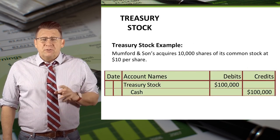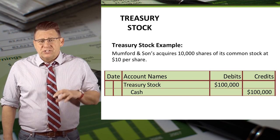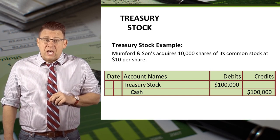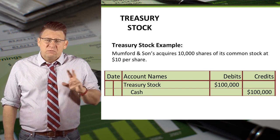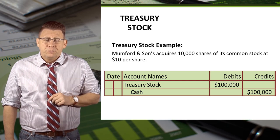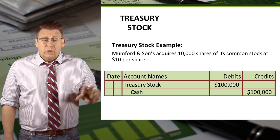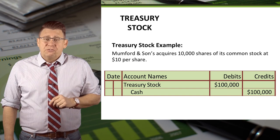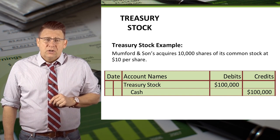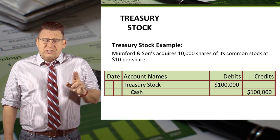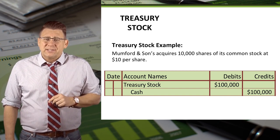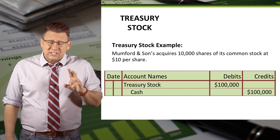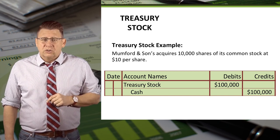In this example, Mumford & Sons purchases 10,000 shares of its common stock for $10 per share. So we would debit Treasury stock and credit cash for $100,000. Treasury stock is always accounted for at its cost, so the cost of these shares is now $10 per share.